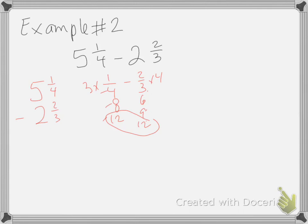So this is going to be 1 2 3 times 3 times 4. Then I multiply 3 times 1 is 3. 3 times 1 is 3. It's 3/12 minus 8 because 2 times 4 is 8, /12. So I'm going to rewrite my fraction. It's going to be 5 3/12 minus 2 8/12.